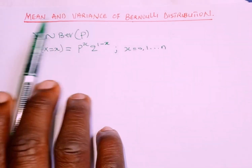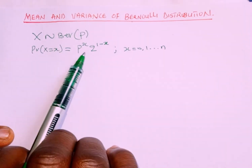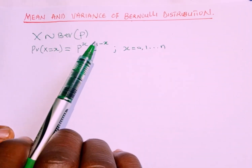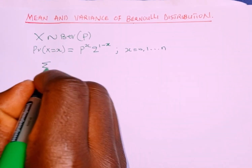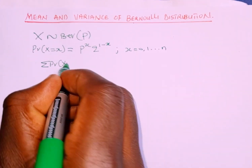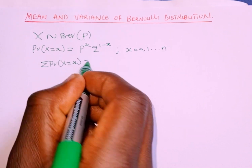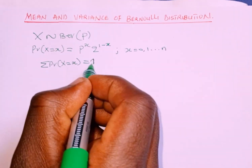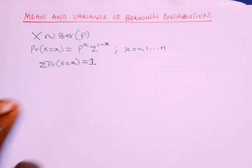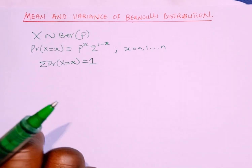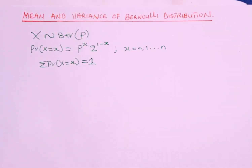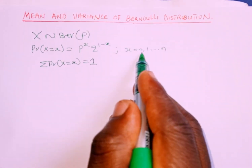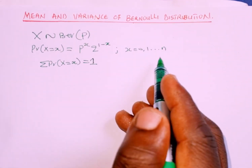We are asked to find the mean and the variance of this distribution function. First, recall that the sum of probabilities is equal to 1. So we need to show that the sum of this probability function equals 1. Remember x takes values 0 and 1.